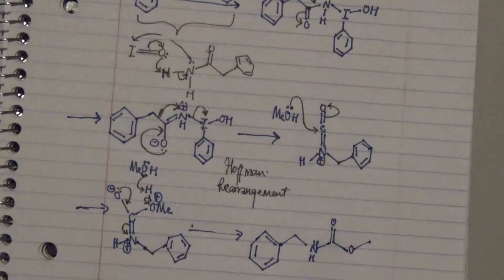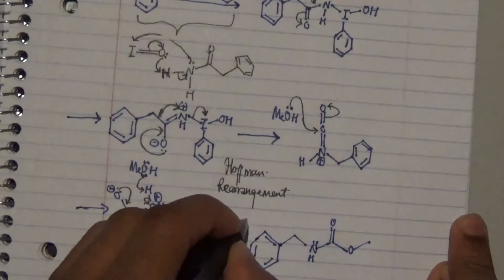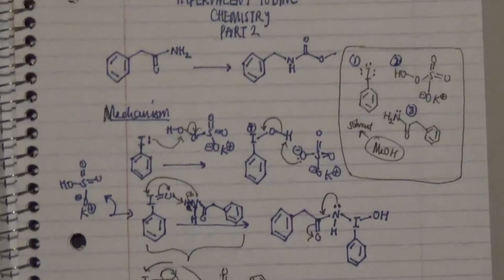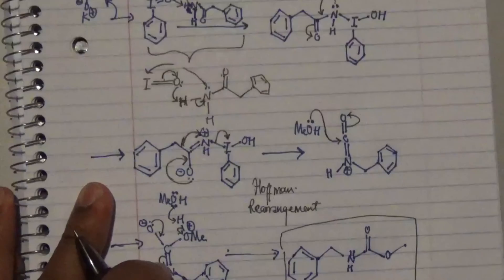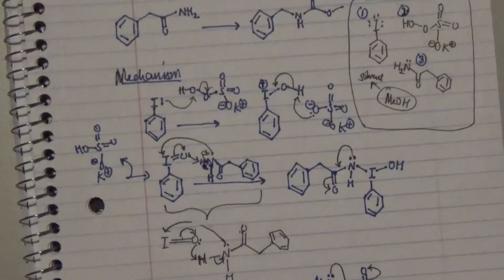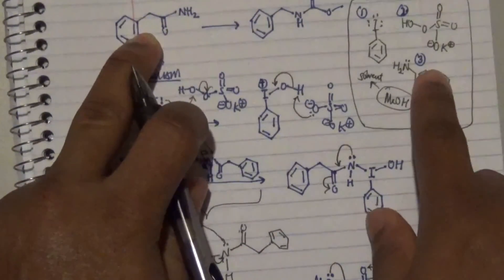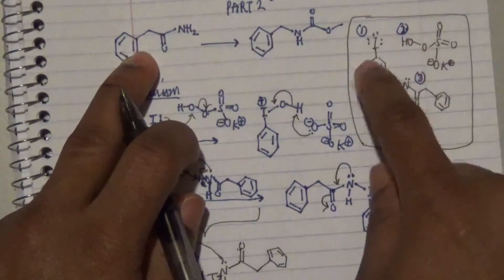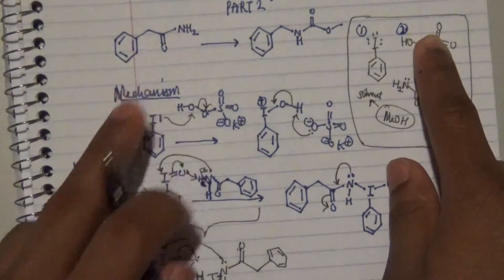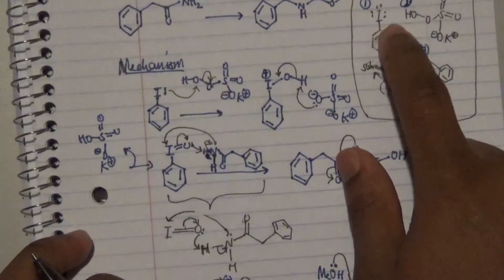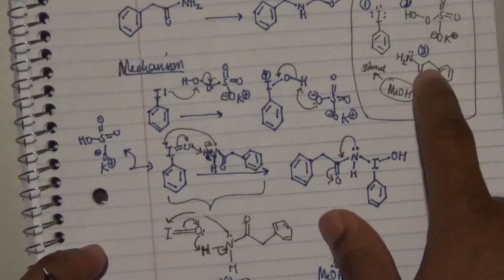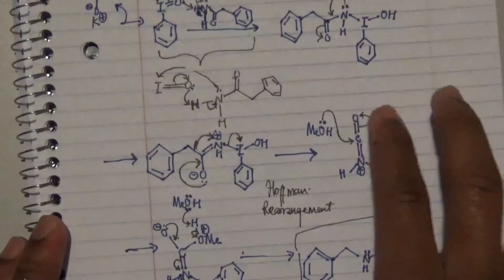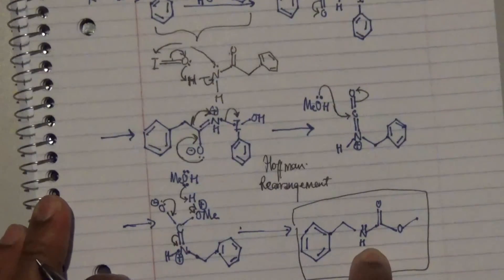What you get as a result of this process is the formation of our desired product. The desired product is obtained, and our reagent is actually species 3. First you need to transform this particular compound to make it activated, and by activating this species and including it in this process in the presence of methanol, you can do this electron-pushing and arrive at the formation of the final product.